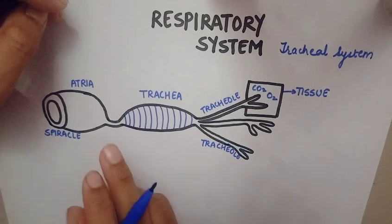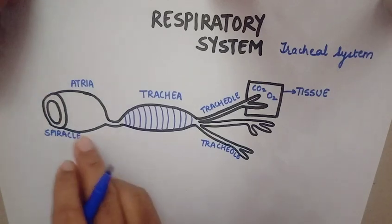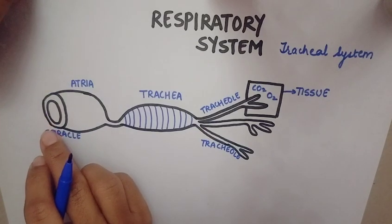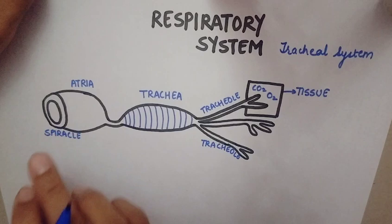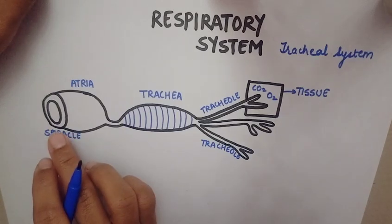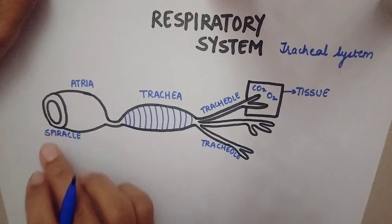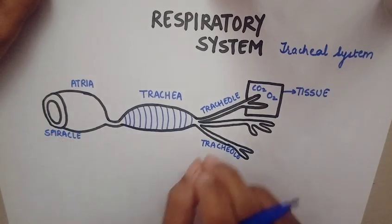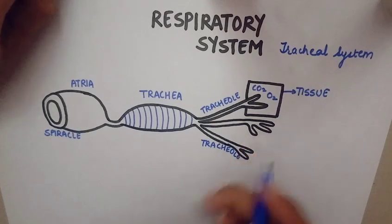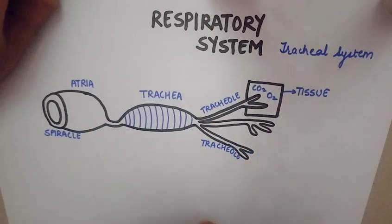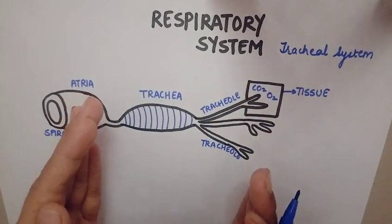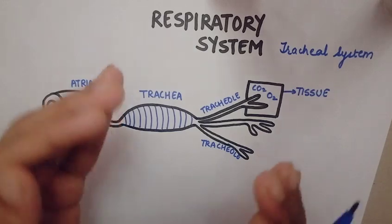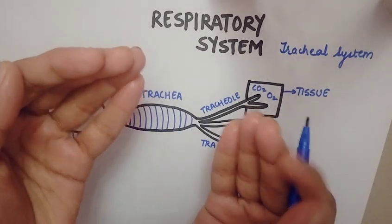Because there are certain respiratory openings present in the body of the cockroach. These openings are present on the ventrolateral surface of the cockroach — the lateral part, slightly ventrally.